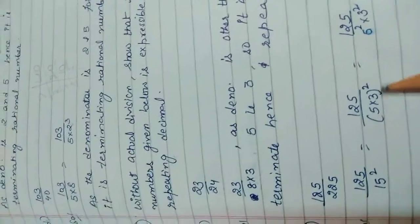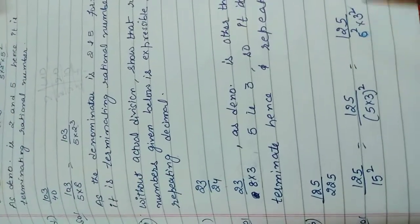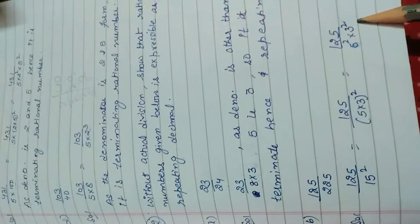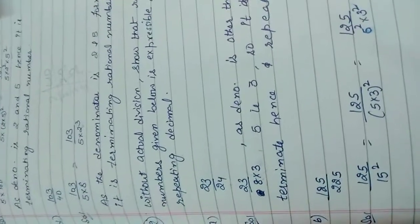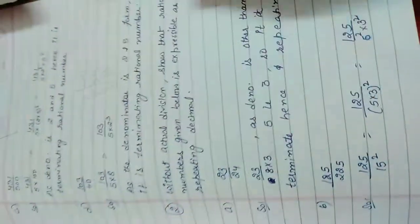225, this is 15 squared, 5 into 3. You are getting 3. So 3 cannot be, if 3 is there then it cannot be a terminating number. Hence it is a repeating number.